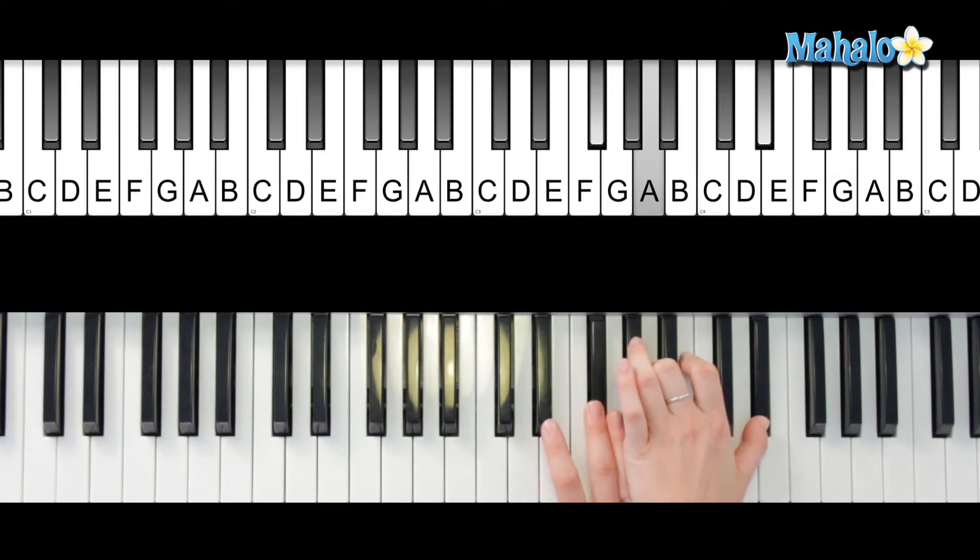So we've got F sharp, A, B, and D sharp. B7 second inversion.